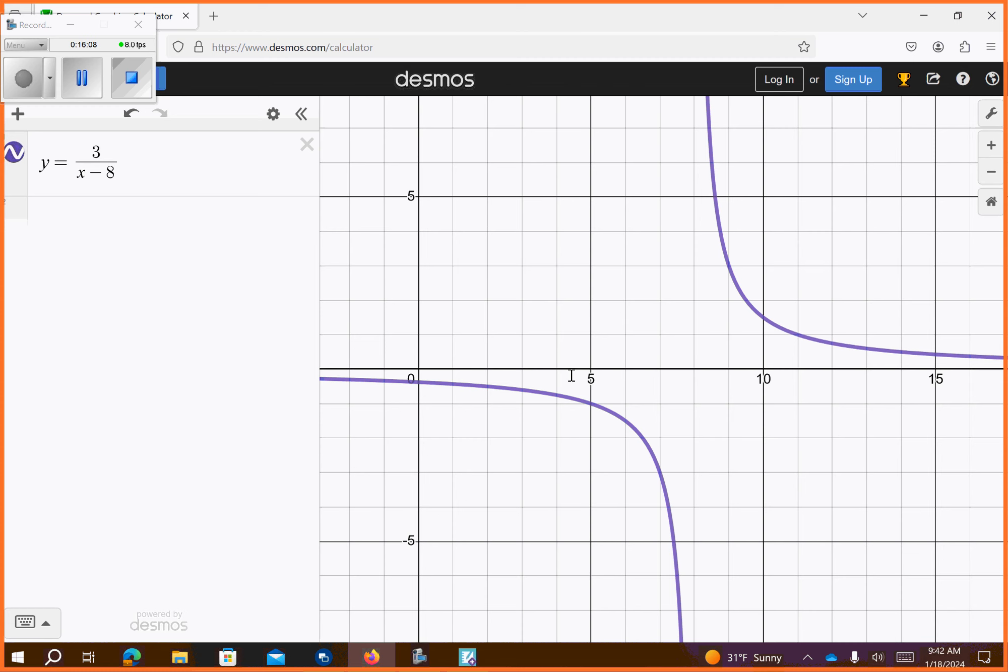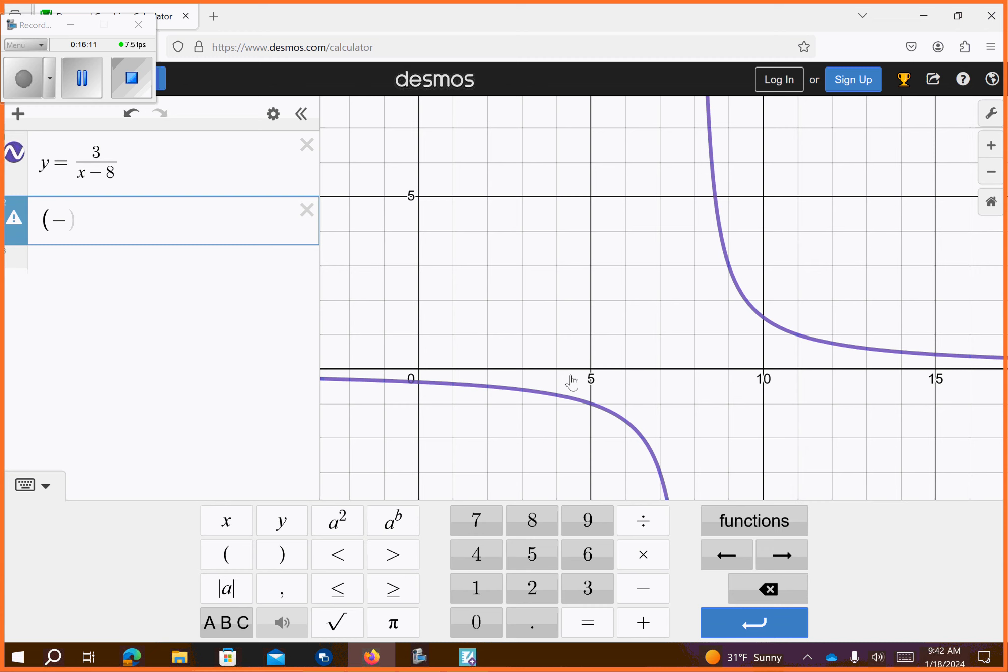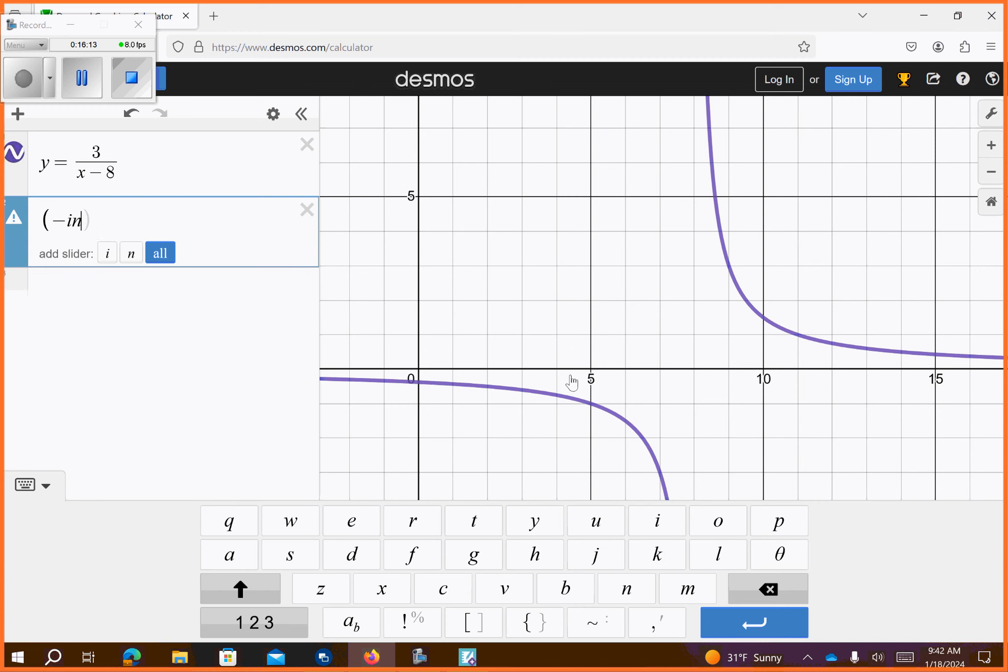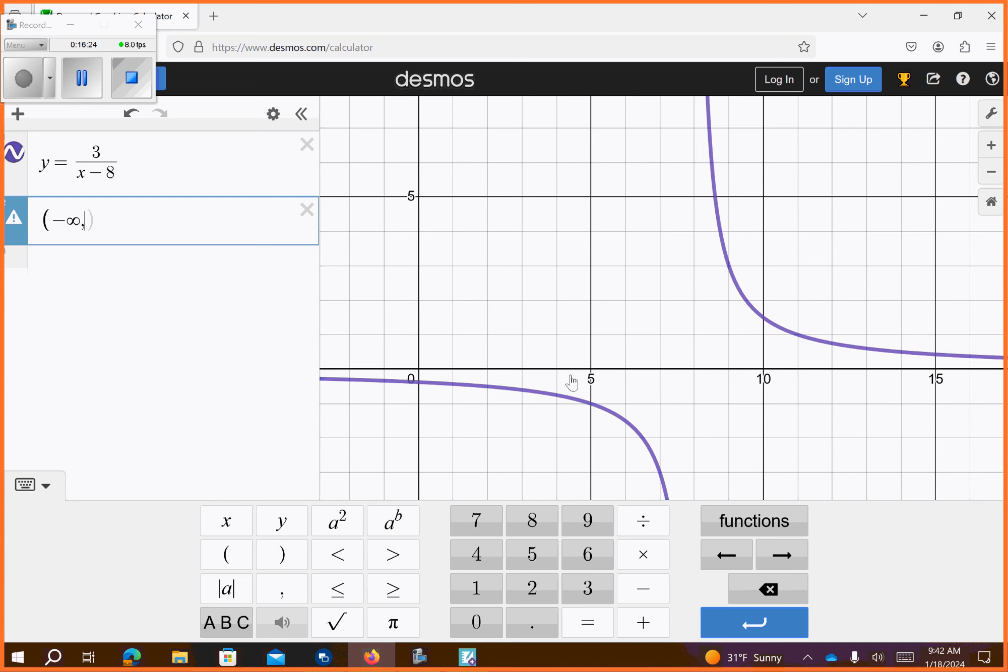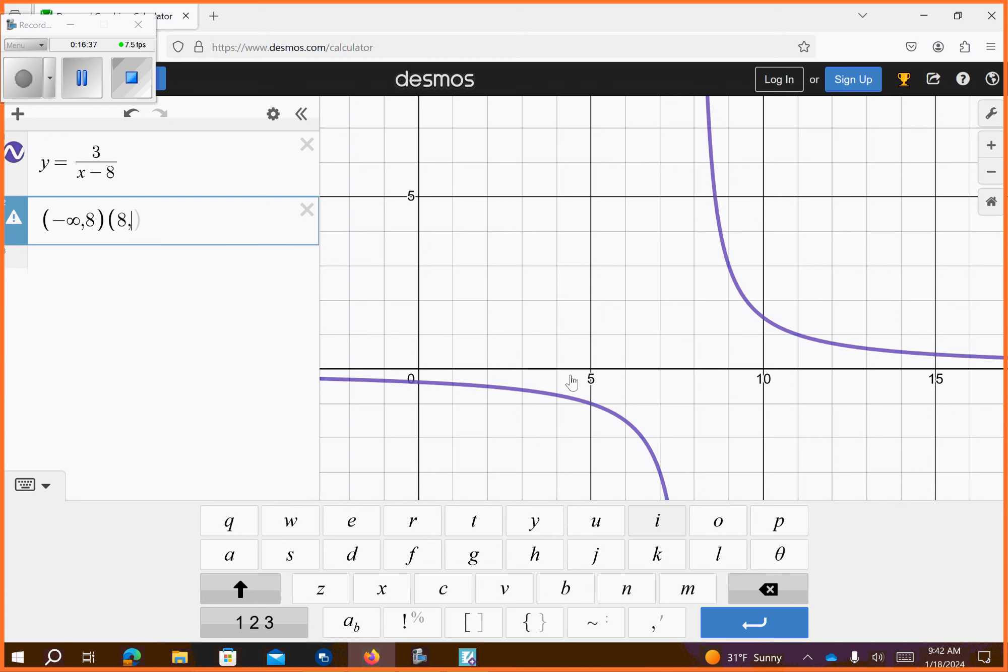So, our domain of this one, let's see how fancy I can get. Negative, I, N, F, infinity. There we go. Oh, yeah! Okay. Comma. And, it's going to go right up to 8. And, this is going to also be a parenthesis, because I can't include it. And, then, I'm going to go open parenthesis, 8 again, comma, and it's going to go to infinity. Okay. And, that's my domain.